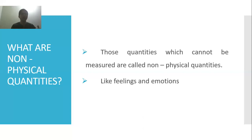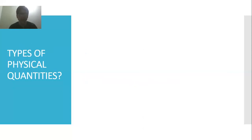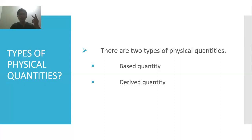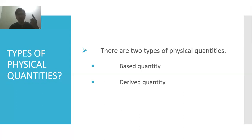Now we are going to talk about the types of physical quantities. There are two types of physical quantities: number one is base quantity and number two is derived quantity. You have to remember the names and that there are two types — base and derived.